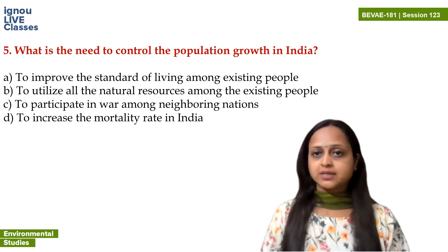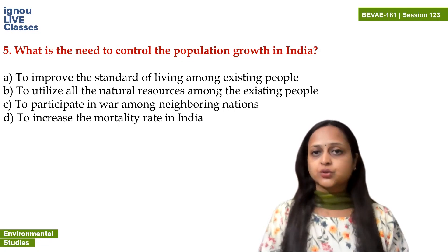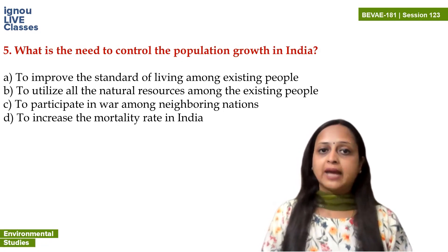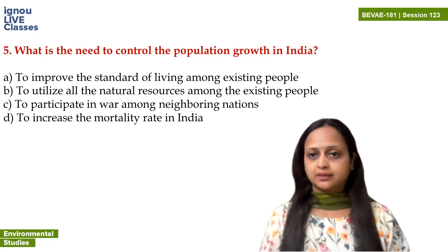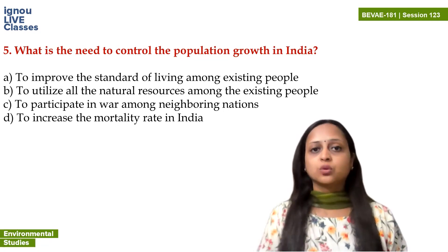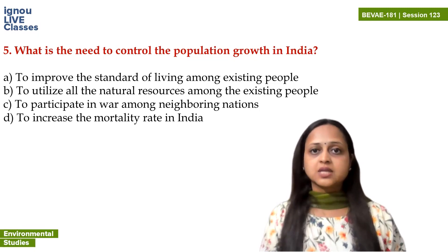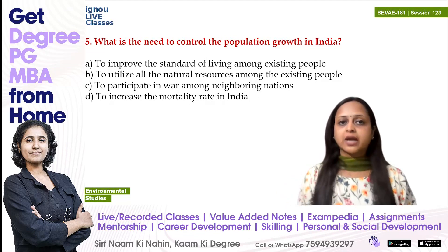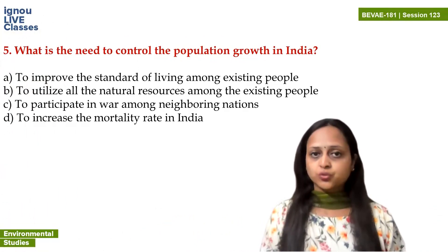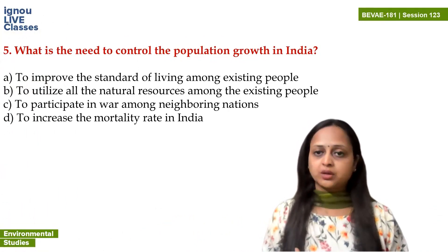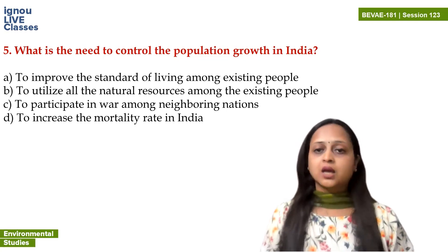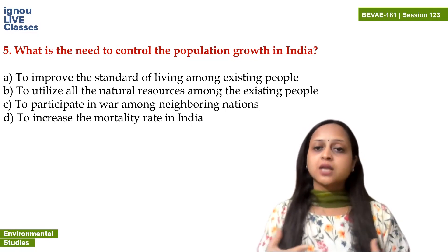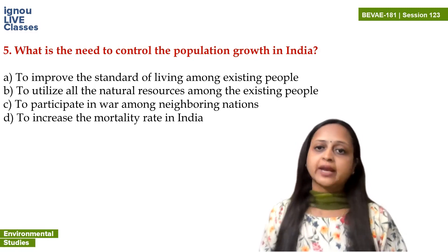Options: to improve the standard of living among existing people; to utilize all the natural resources among existing people; to participate in war among neighboring nations; to increase the mortality rate in India. Mortality means death rate — do we want to increase the death rate? Or fight with neighboring nations? Or utilize all natural resources? Or improve our people's living standard? This is true — we need to control population growth because we want to improve the living standards of our people. If their living standard improves, obviously malnutrition won't happen, there will be employment, and our economy won't remain poor. So the correct answer is A.